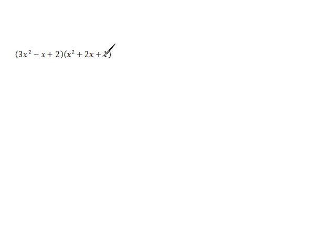So let's work this problem. We've got a trinomial times a trinomial. Let's start out here. We're going to distribute through our 3x squared. So 3x squared times x squared would be 3x to the fourth. And then 3x squared times 2x would be plus 6x cubed. And 3x squared times a positive 1 would be plus 3x squared.